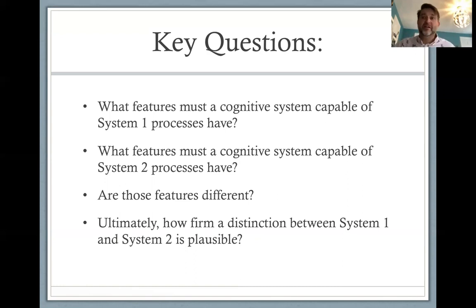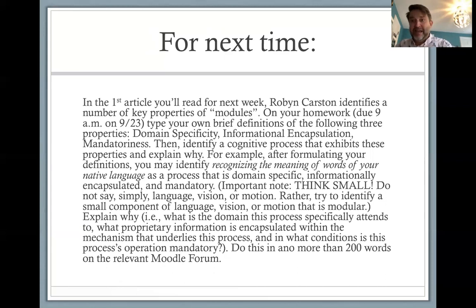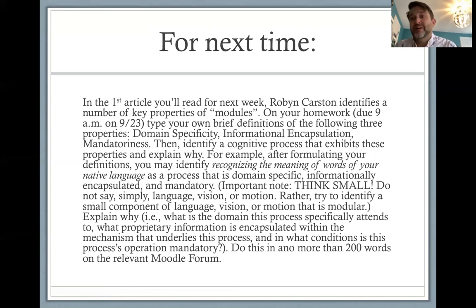As I mentioned, next week we're going to be looking at the modularity of mind. The idea is basically that a mind, just like a body, is an evolved system. Just as bodies have distinct organ systems to realize different processes, minds presumably have subsystems that do individual subtasks that minds have to complete. One account of what these subsystems are describes them as modules. For next week, you'll be reading Robin Karsten on modules — she identifies a number of key properties of modules.